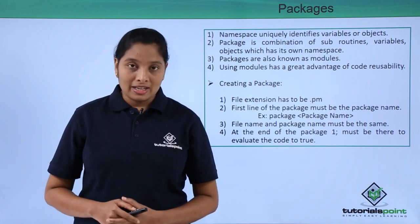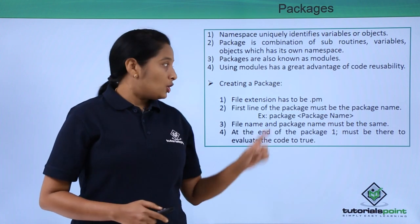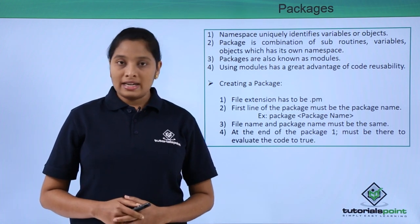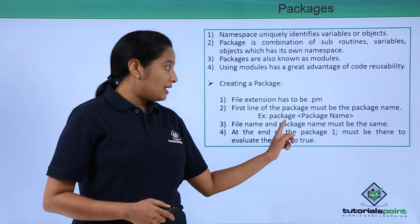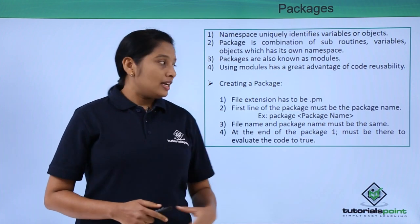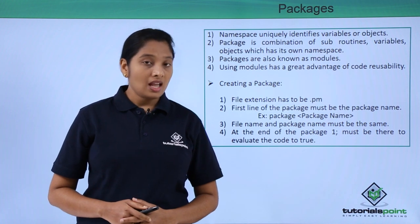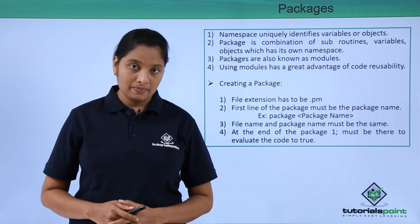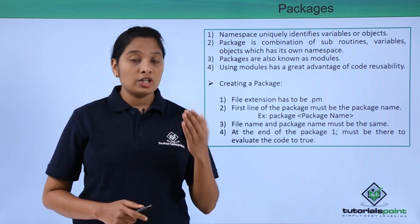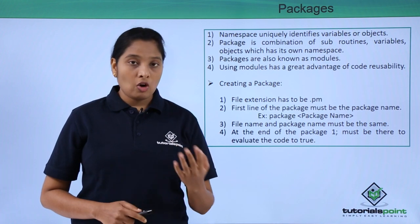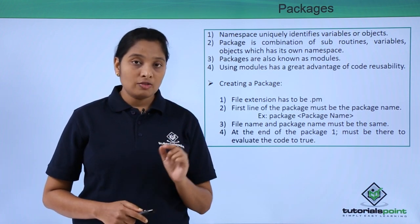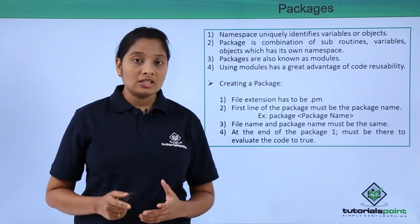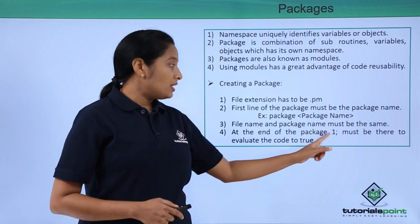To create a package, the file extension has to be .pm. At the beginning of the script, when you are creating a package, use the keyword package followed by the package name, and it should end with a semicolon. The package name and the file name have to be the same. At the end of the package, after you implement all the subroutines and objects, you have to mention one semicolon — because to evaluate the code to true, you have to mention that semicolon.